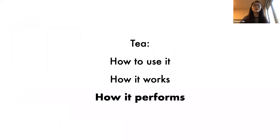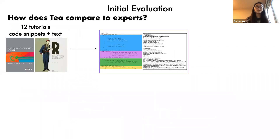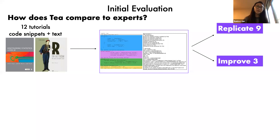In the first part of our initial evaluation we compared the statistical tests experts chose with ones TEA recommended. We took 12 tutorials from two popular R textbooks and implemented them as TEA programs based on the code examples. All assumptions the authors explicitly stated were added to the TEA program's assumptions clause. In nine out of the 12 cases, TEA selects the same test. In the other three cases, TEA selects a more conservative alternative — because TEA found that the expert choices were not applicable given the authors' explicitly stated assumptions about data properties.